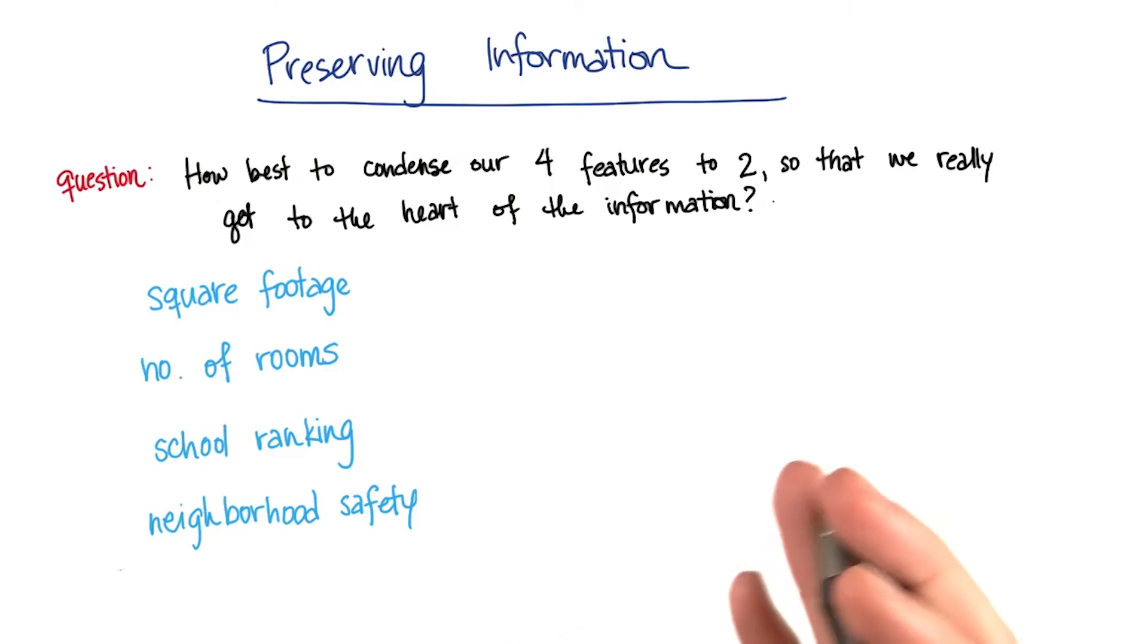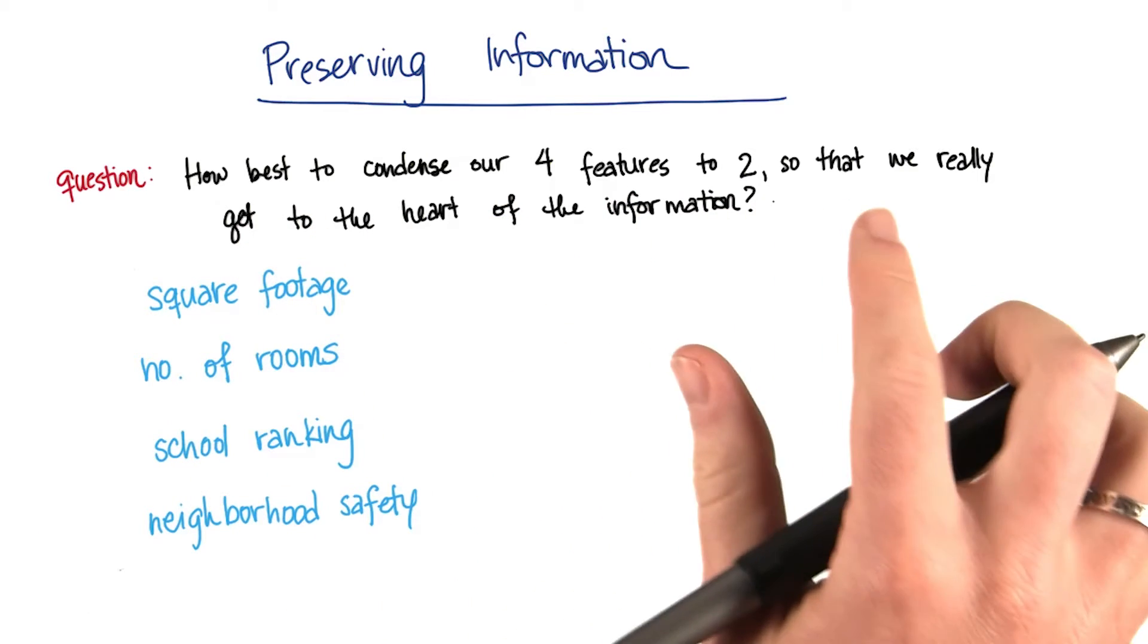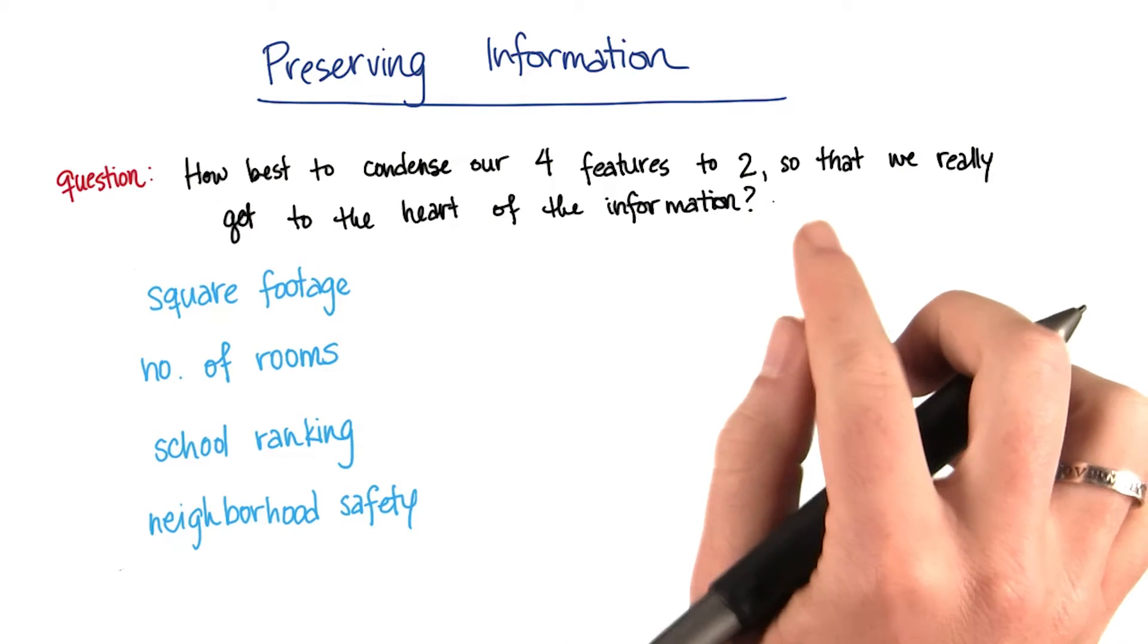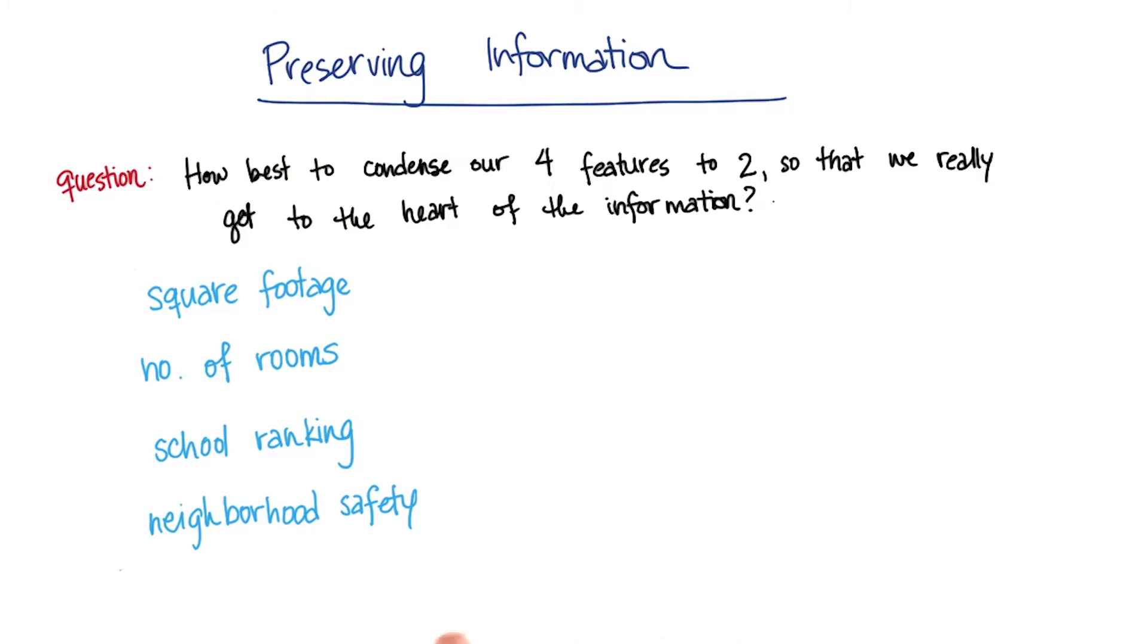My question is, what we'll be exploring in this lesson, what's the best way to condense our four features to two? So that we really get to the heart of the information. So we're really probing the size and the neighborhood.